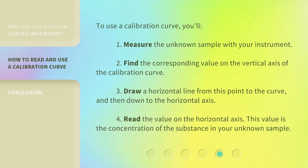To use a calibration curve, you'll: 1. Measure the unknown sample with your instrument. 2. Find the corresponding value on the vertical axis of the calibration curve. 3. Draw a horizontal line from this point to the curve, and then down to the horizontal axis. 4. Read the value on the horizontal axis. This value is the concentration of the substance in your unknown sample.